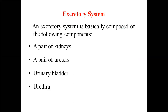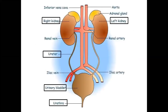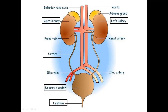A pair of kidneys, a pair of ureters, urinary bladder, and urethra. In the diagram you can see a pair of kidneys — right kidney and left kidney. On top of both kidneys, a small yellow color structure is the adrenal gland. The red color structures are the inferior vena cava and the aorta. Under the kidney you can see two tubes that we call ureters. These ureters open into one organ which we call the urinary bladder, and the urinary bladder opens into the urethra. So this excretory system is basically composed of a pair of kidneys, a pair of ureters, one urinary bladder, and the opening is the urethra.